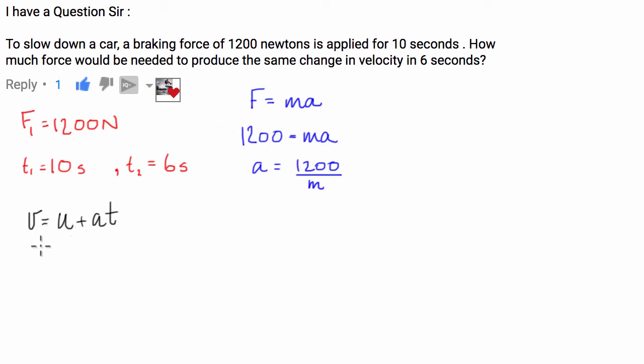So this is for our initial 1200 newtons for 10 seconds. We're going to say that our final velocity is zero. We don't know where we're coming from. We don't know what our initial velocity is.